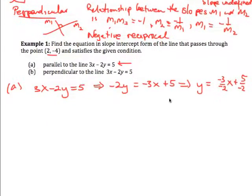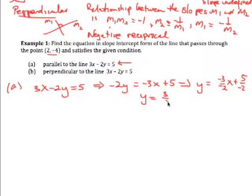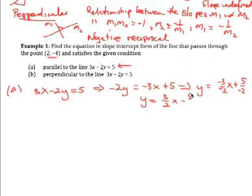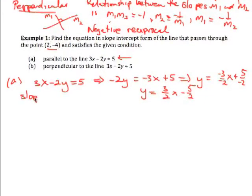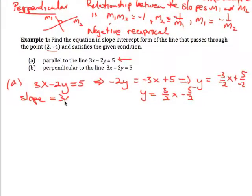So in other words we have that y equals 3/2x minus 5/2. The point being here is that the slope of this line is actually equal to 3/2.